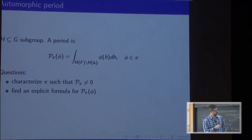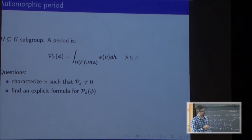The following questions: can we characterize π for which the period is non-vanishing, and can we maybe find an explicit formula for the period of π or maybe the modulus of it? What I want to talk about is how can we try to approach this problem via harmonic analysis.